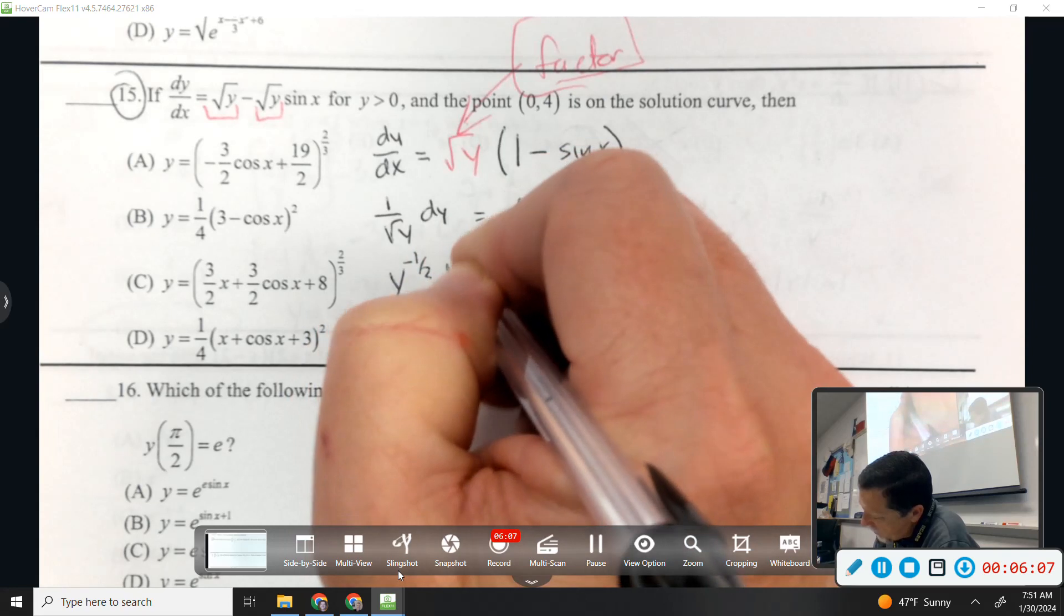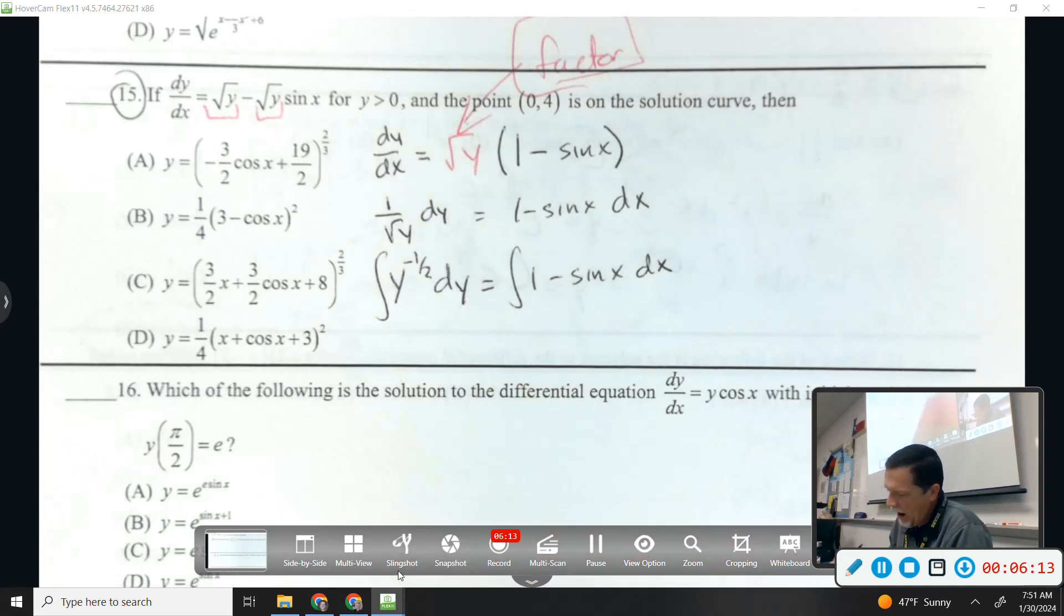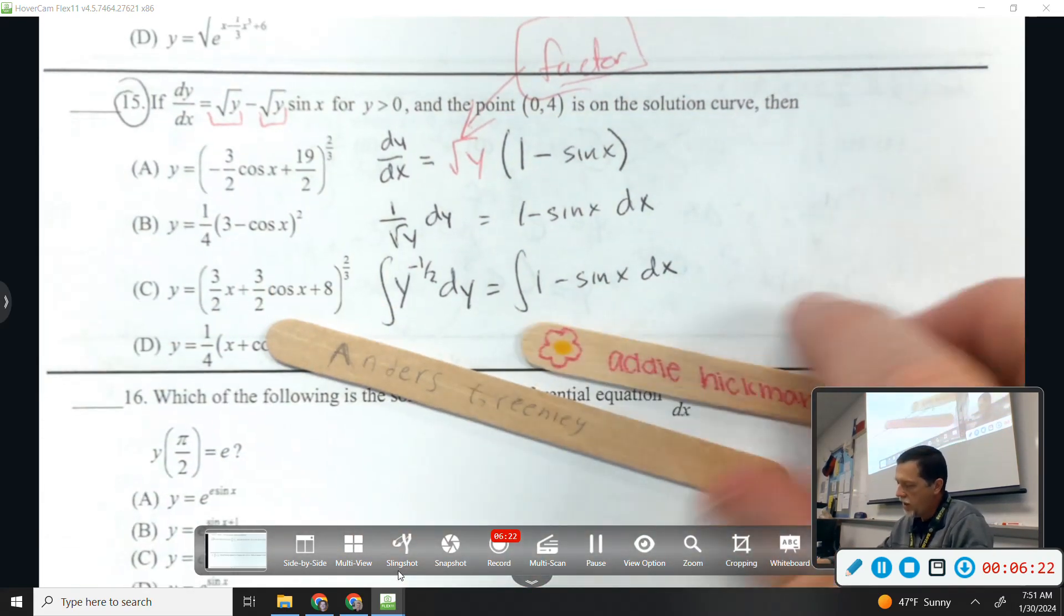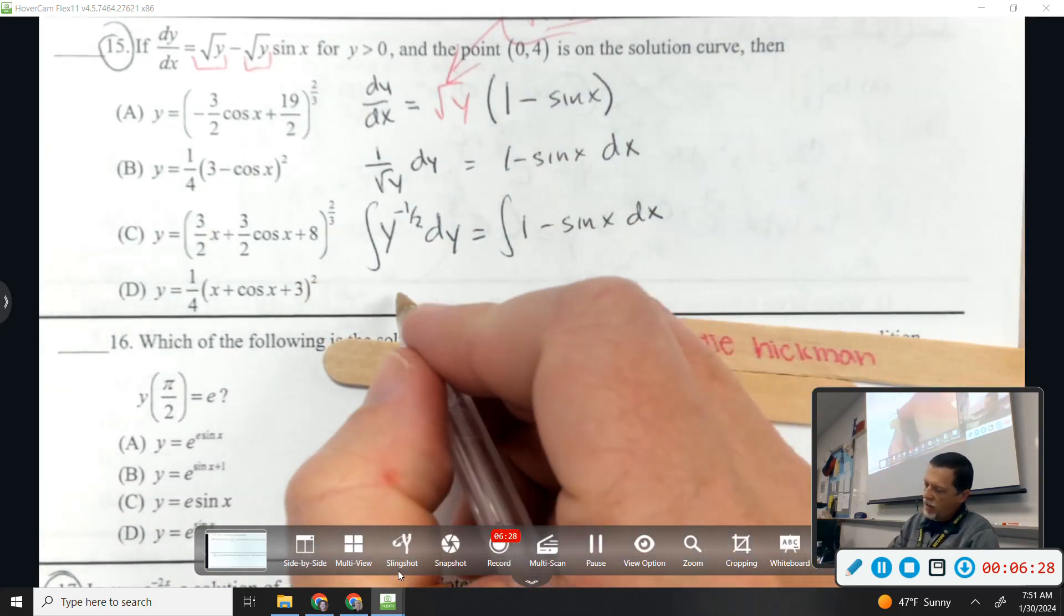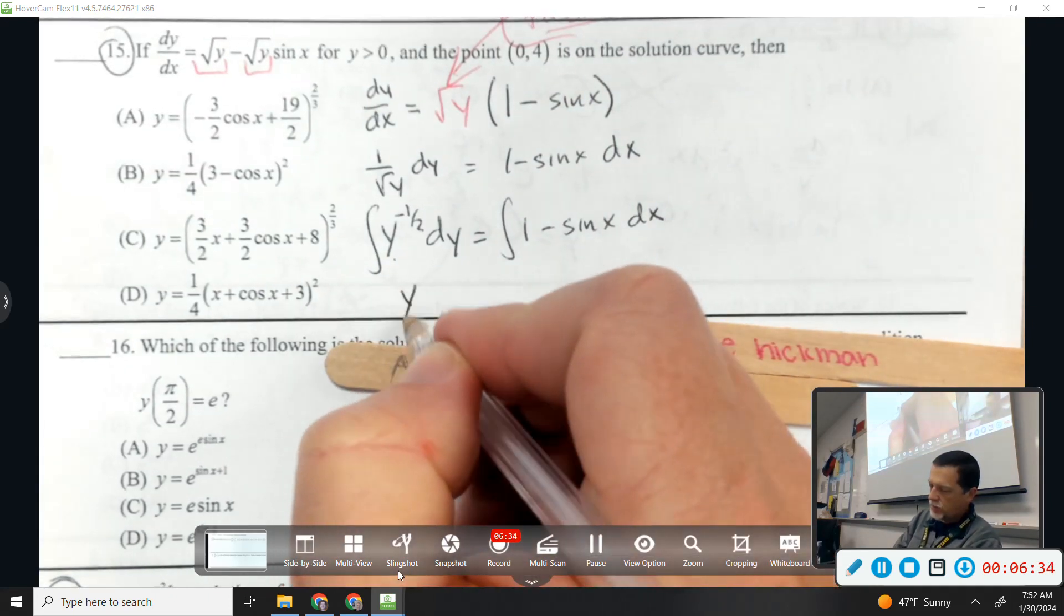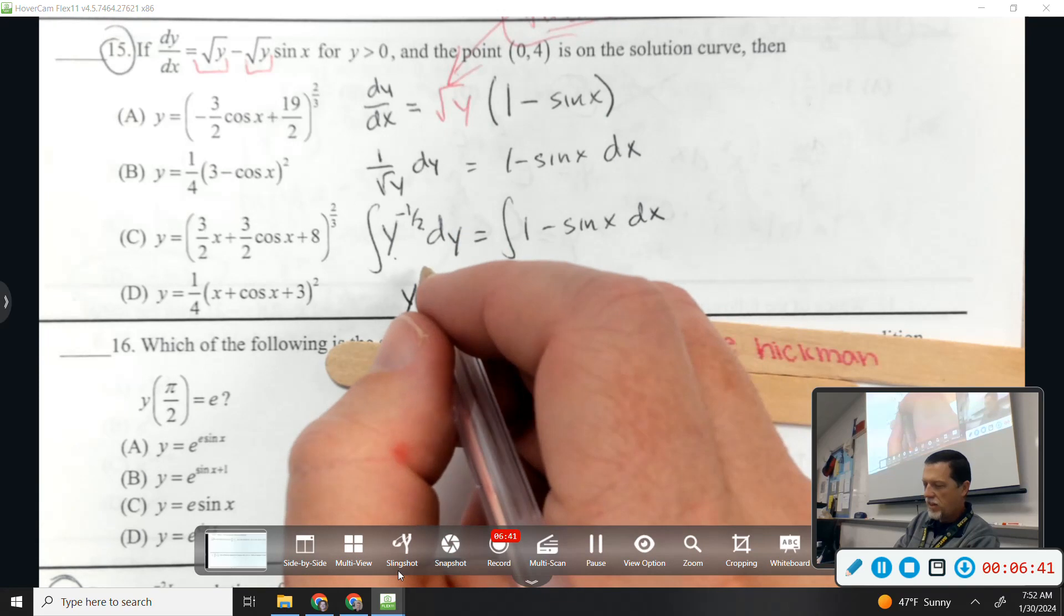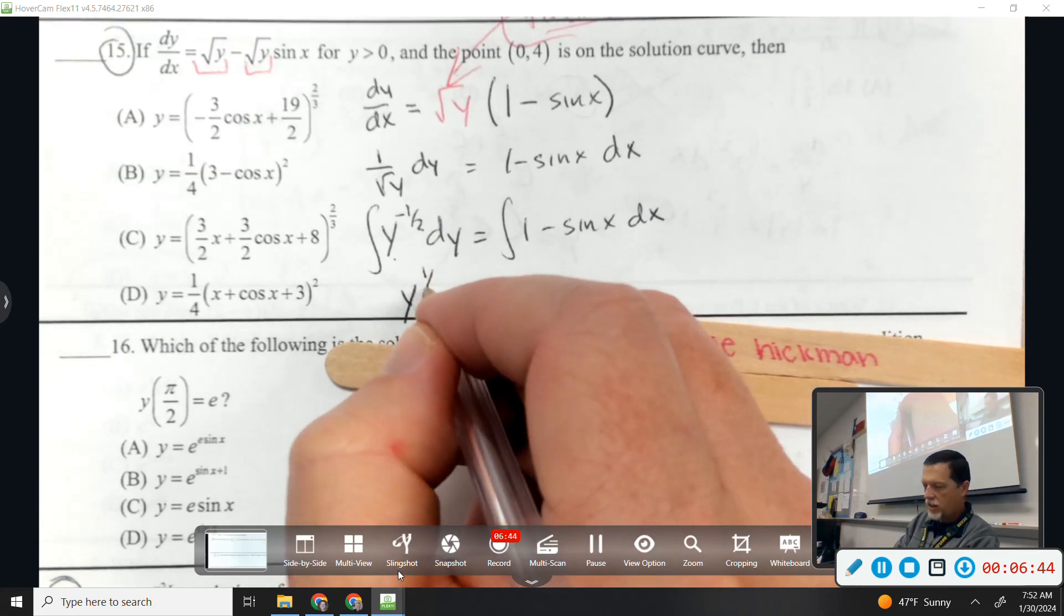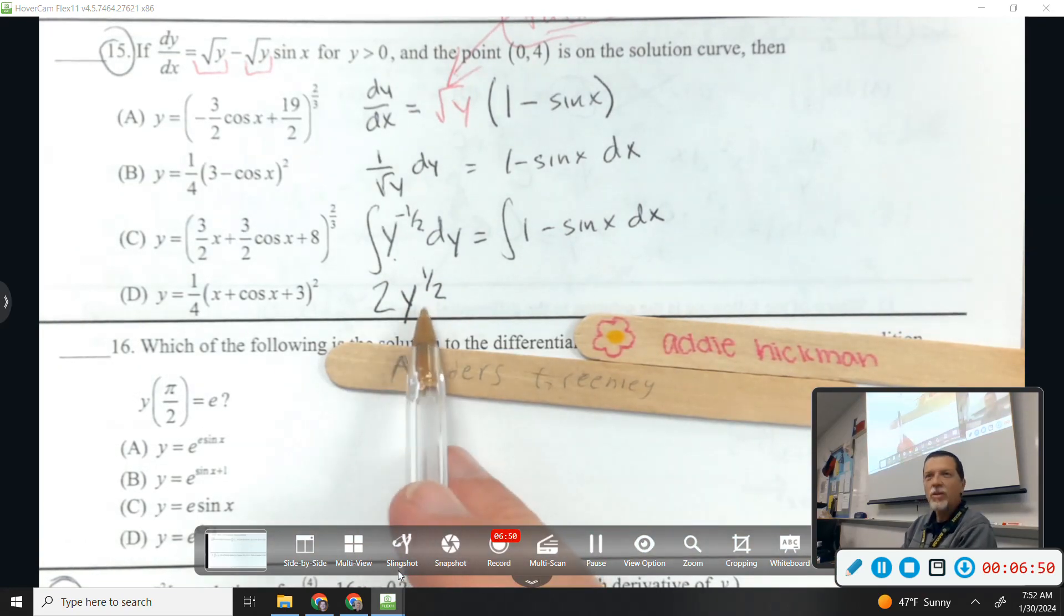So let's rewrite this as a power so that I can integrate it. Let's see, Anders, how about the antiderivative of y to the negative 1 half? That's going to be square root of y, or two square root of y, right? Yes. I'm going to write it as y to the 1 half, but that is the same thing as square root. So yes.